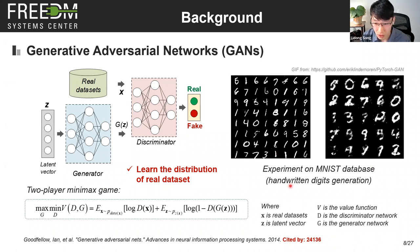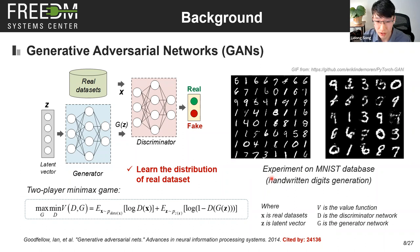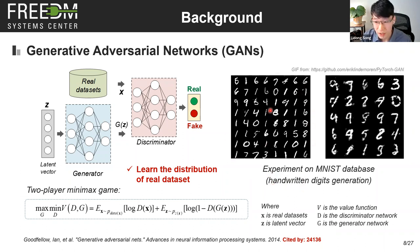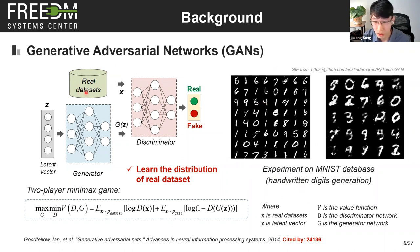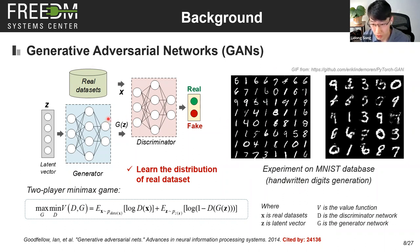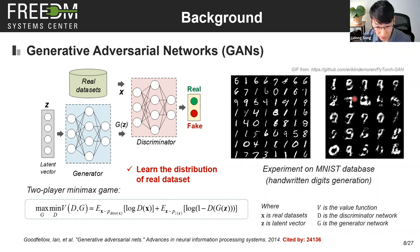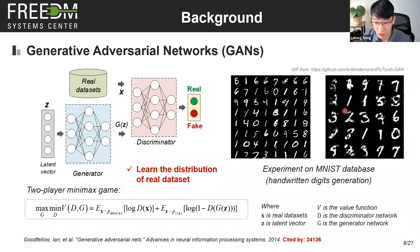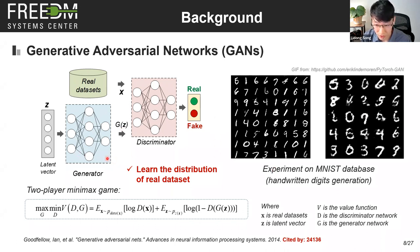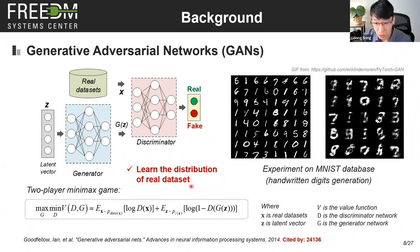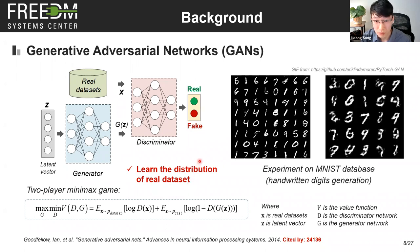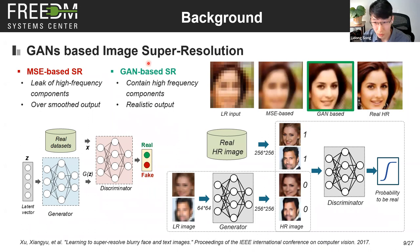Through the competition between the two players, the generator will gradually learn to generate more and more realistic data as training goes on. Here is an example on the MNIST database — its goal is to generate realistic handwritten digits. The left side is the real human handwritten digits, and the right side is the fake ones created by the generator. The most appealing characteristic of the GAN model is that it can learn the distribution of the real dataset. This is helpful in solving the super resolution problem.